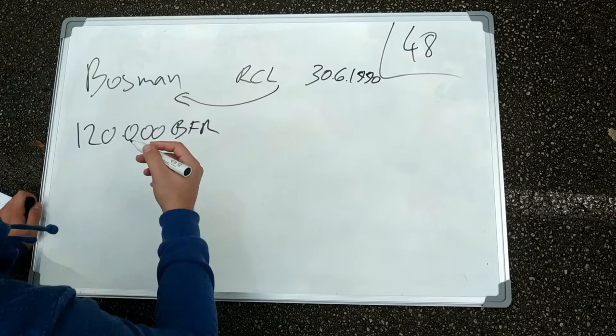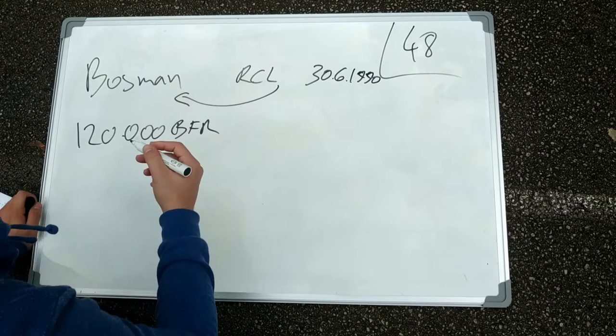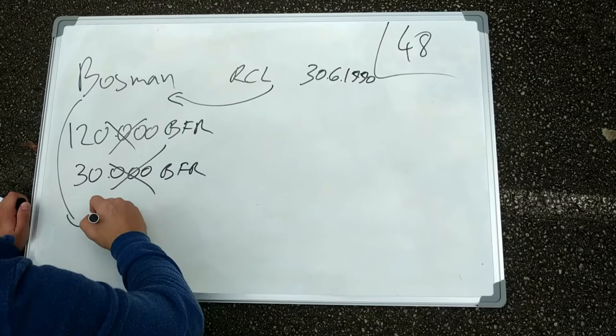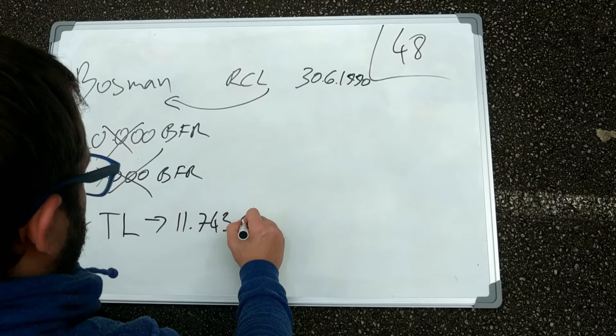April 21st 1990, RC Liège offered Bosman a new contract for one season, reducing his pay to 30,000 BFR, which was the minimum permitted by URBSFA rules. Bosman refused and was put on the transfer list. The compensation fee was set to 11,743,000 BFR.